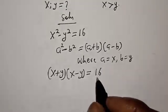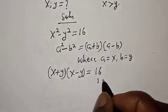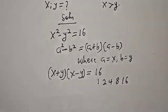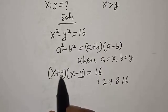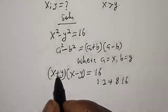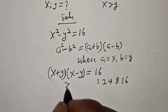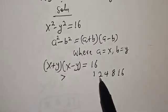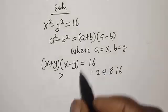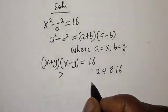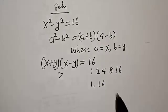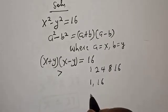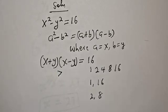Let's look for the factors of 16. We have 1, 2, 4, 8, and 16. Now take note: this is x plus y and this is x minus y, therefore x plus y is greater than x minus y. We look for two numbers whose product gives 16: we have 1 and 16, and we have 2 and 8.